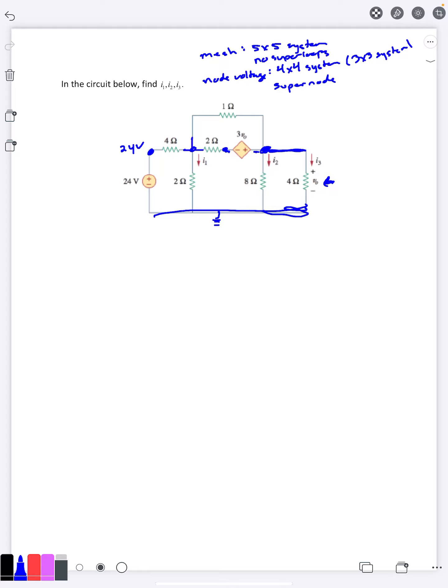So if I go ahead and write my first node voltage equation, I'll call this v1 here. I'll call the middle one v2 and the right v3. So v1 minus 24 over 4 plus going downwards here v1 minus 0 over 2, going up v1 minus v3 over 1, and going right v1 minus v2 over 2 equal to 0.